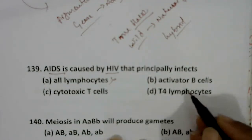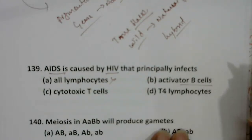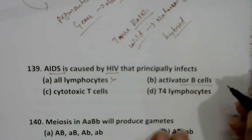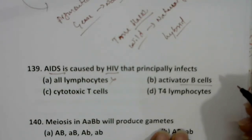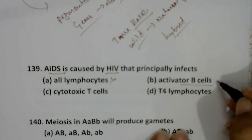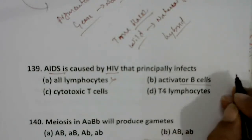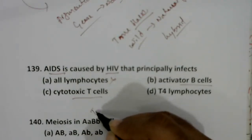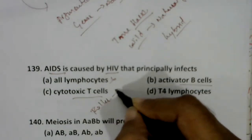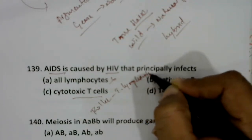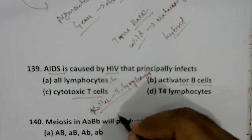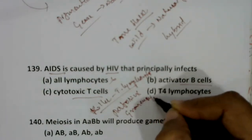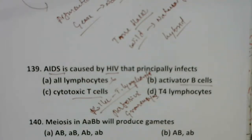Activator B cells: B cell receptors bind to either soluble or membrane-bound antigens, and once bound to membrane-bound antigens, they get activated — these are called activator B cells. Cytotoxic T cells are killer T lymphocyte cells that secrete perforins as well as granzymes.